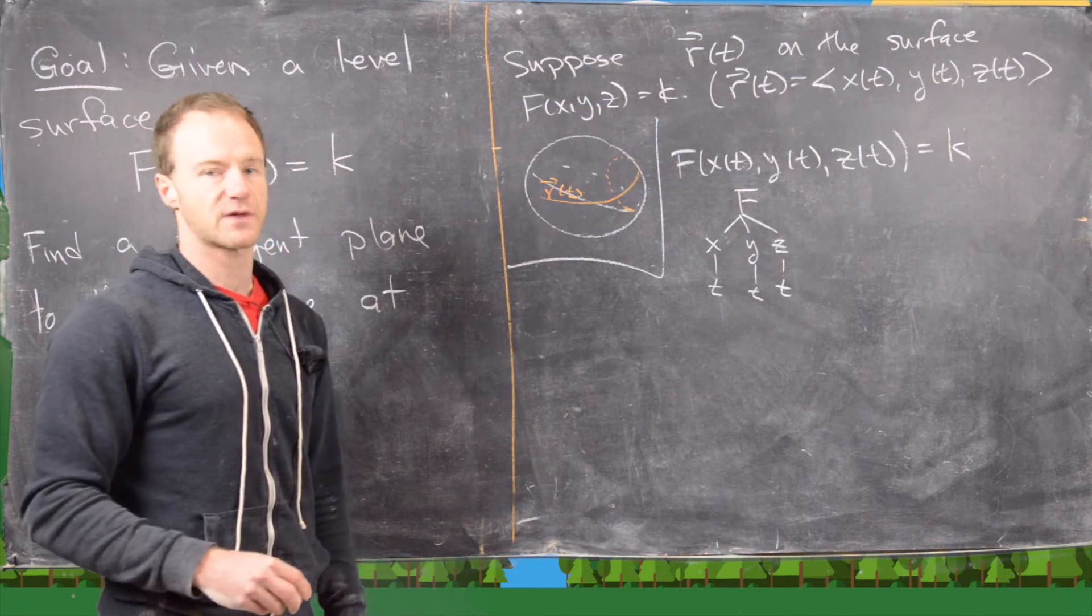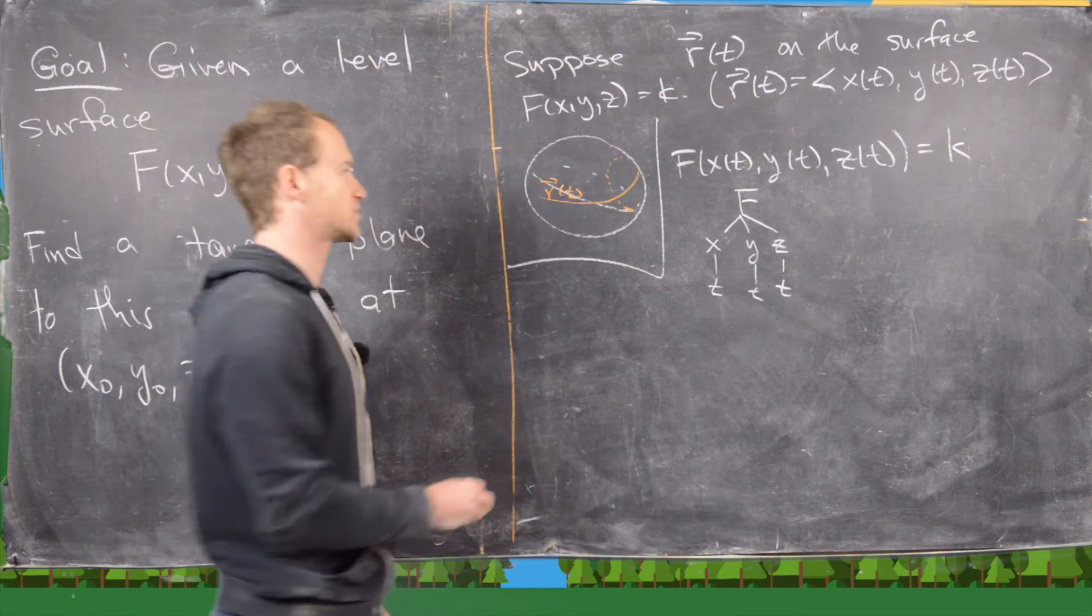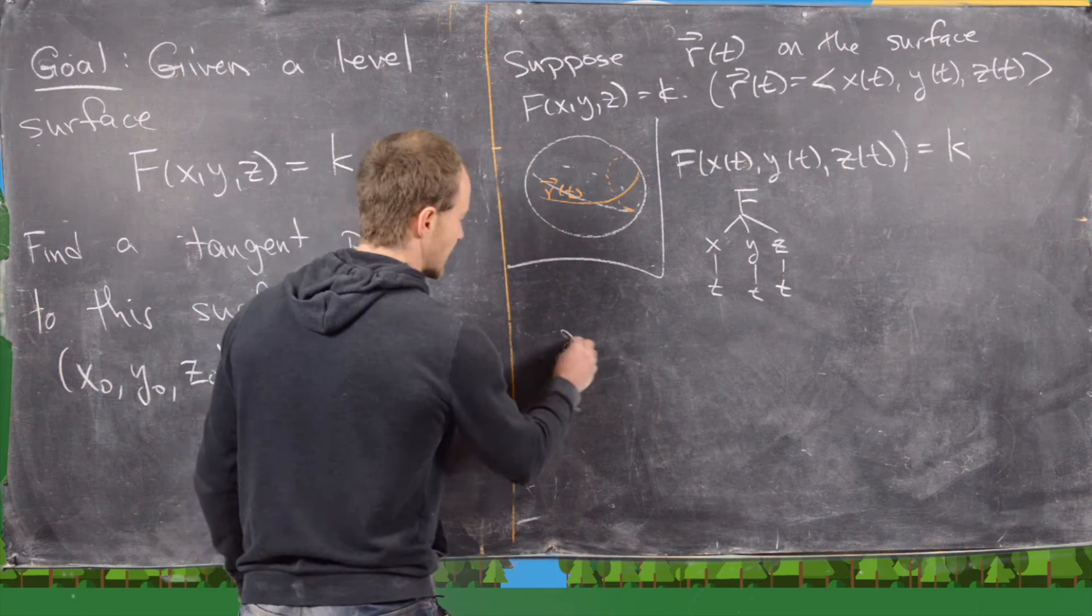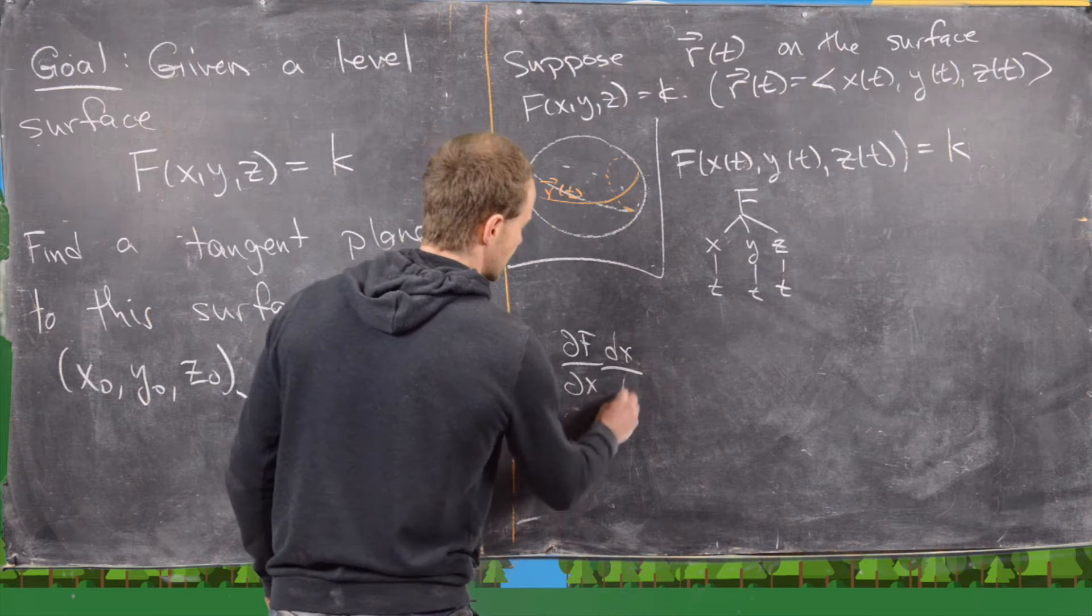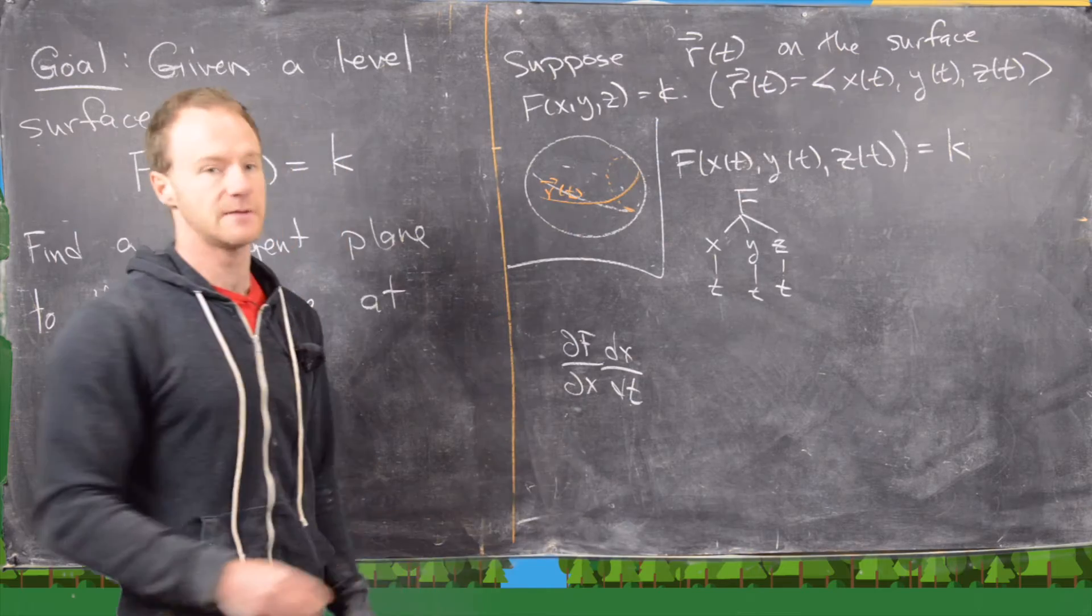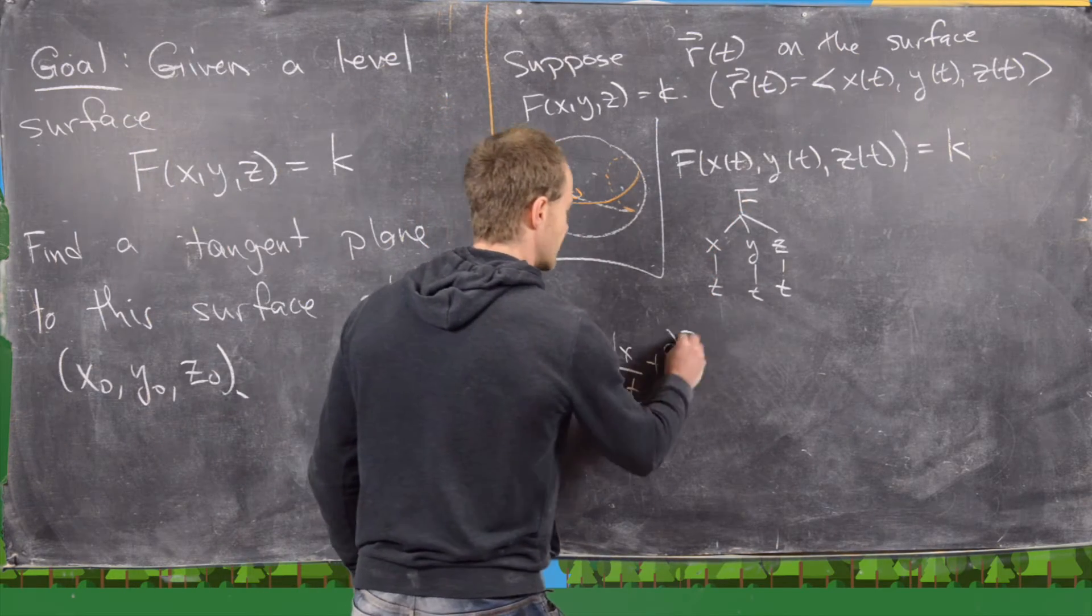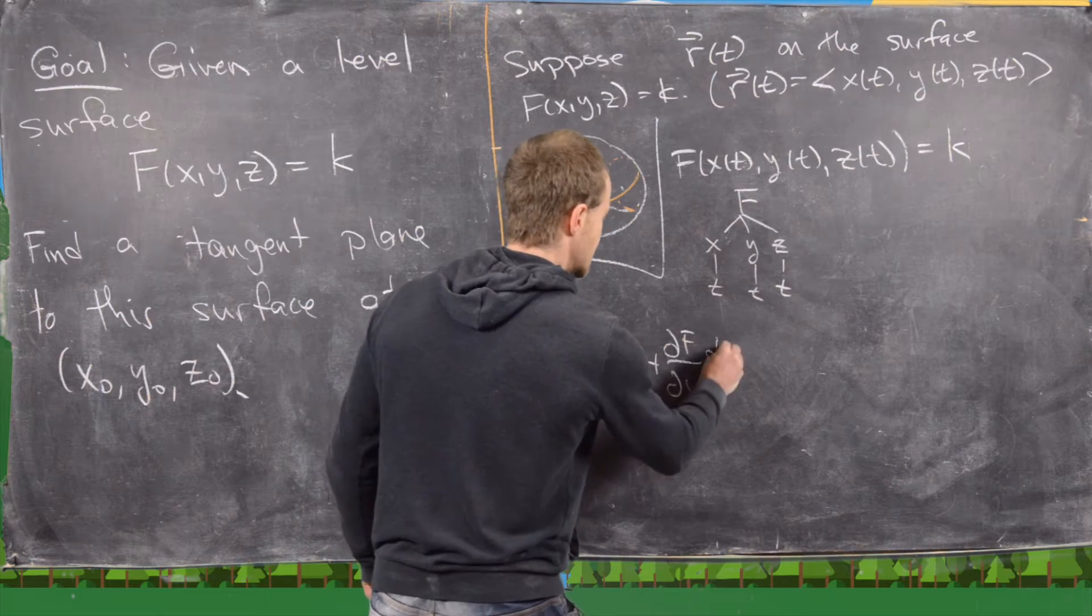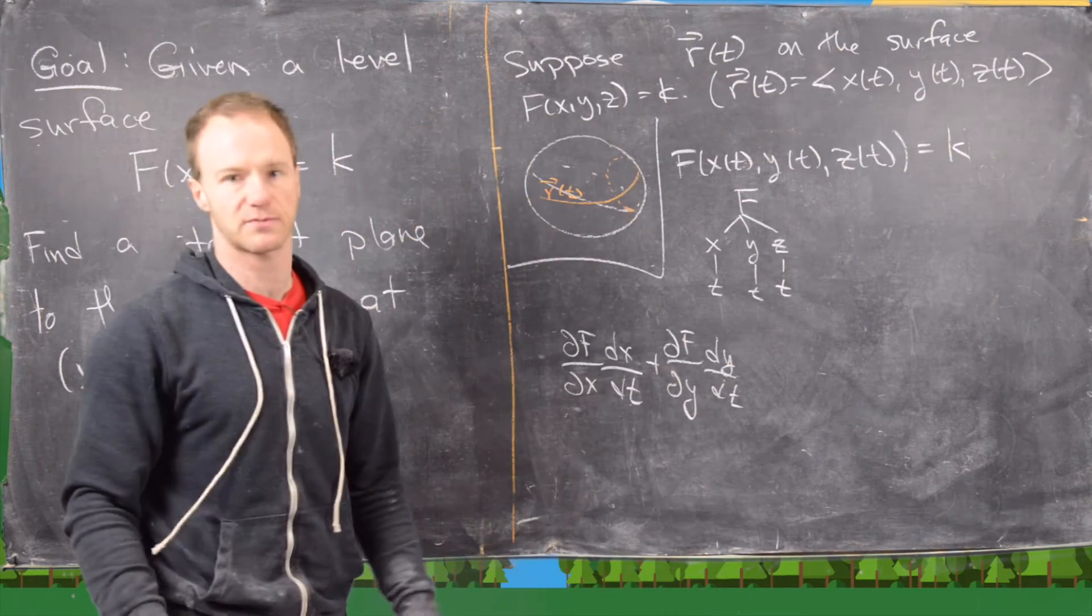So if we take the derivative of this with respect to t, we can use this chain rule built off of this tree diagram. So we'll get the partial of f with respect to x times the derivative of x with respect to t. So that's going down this branch. We'll get the partial of f with respect to y times the derivative of y with respect to t. That's going down this center branch.